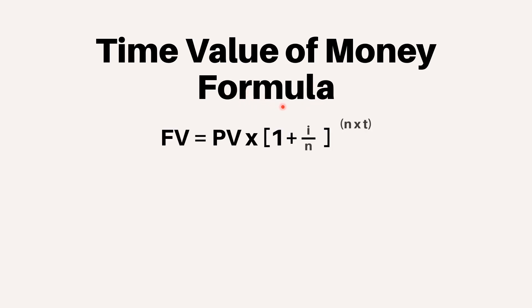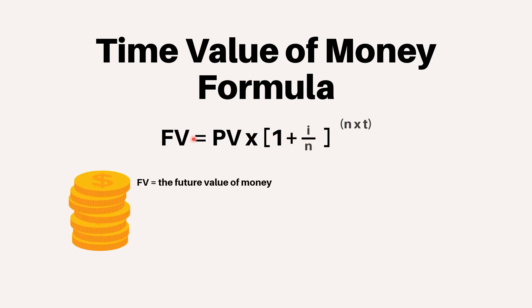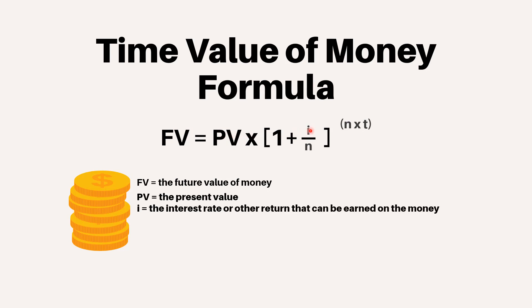A specific formula can be used for calculating the future value of money so that it can be compared to the present value. Future value equals present value multiplied by (1 plus I divided by N) to the power N times T, where FV equals the future value of money, PV equals the present value, I equals the interest rate or other return that can be earned on the money, and T equals the number of years to take into consideration.